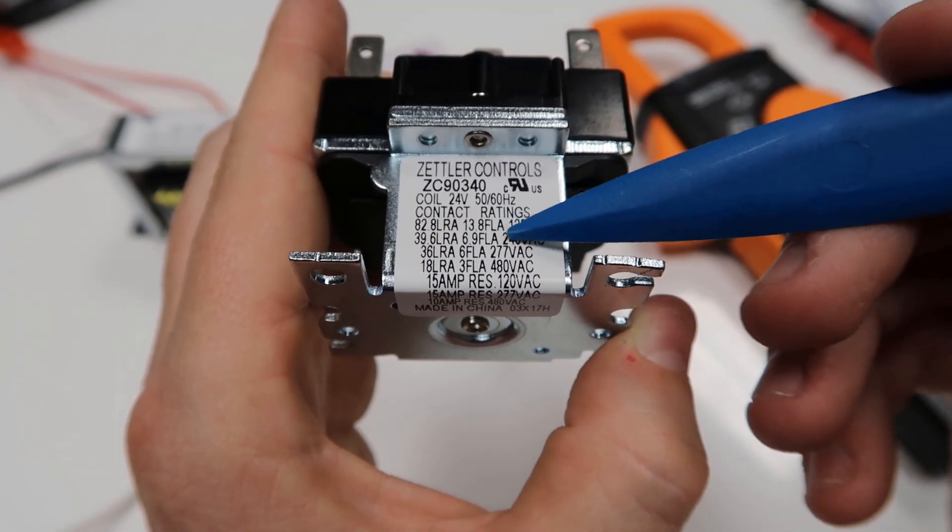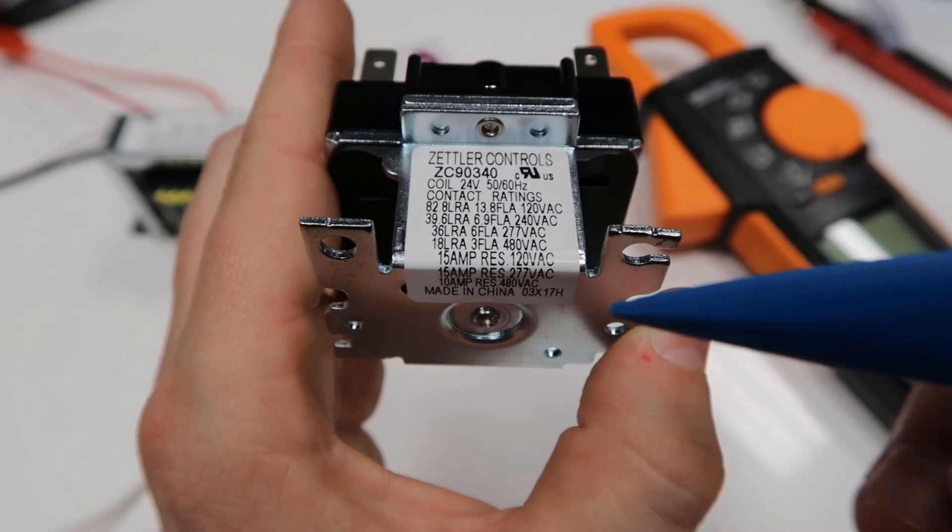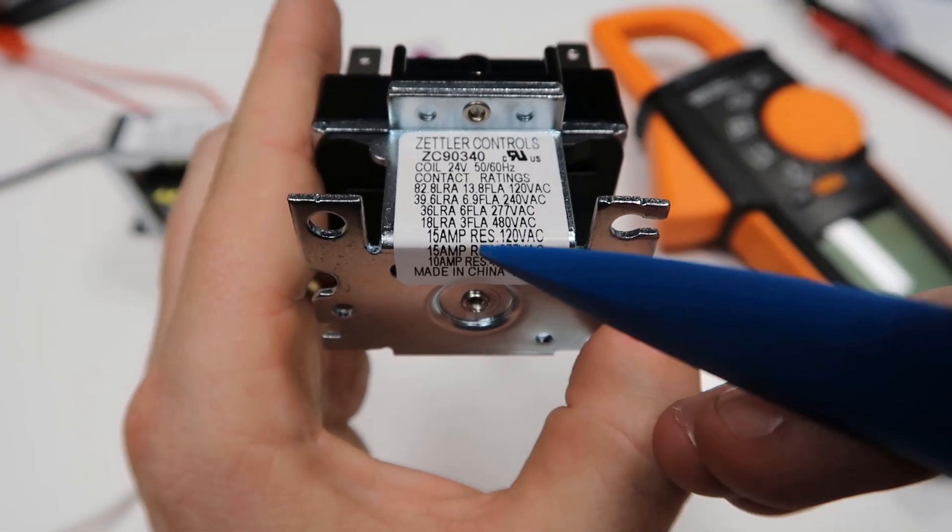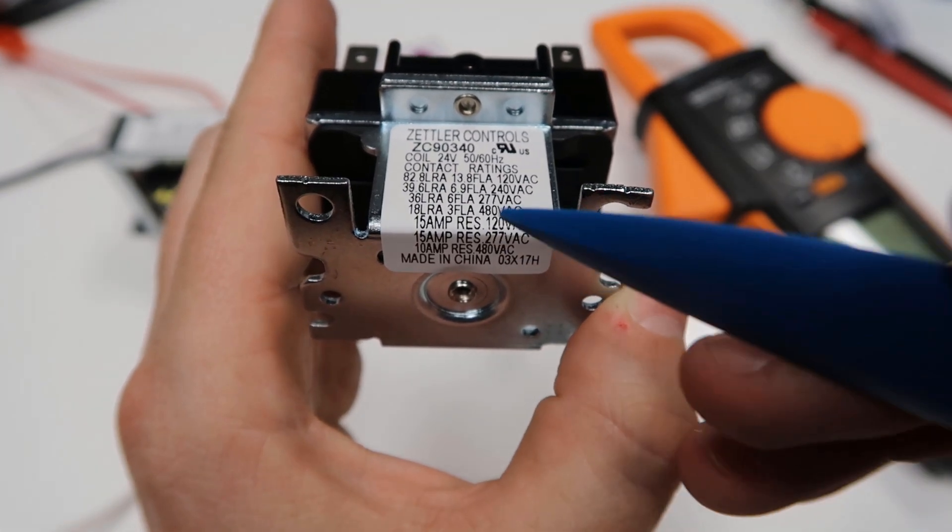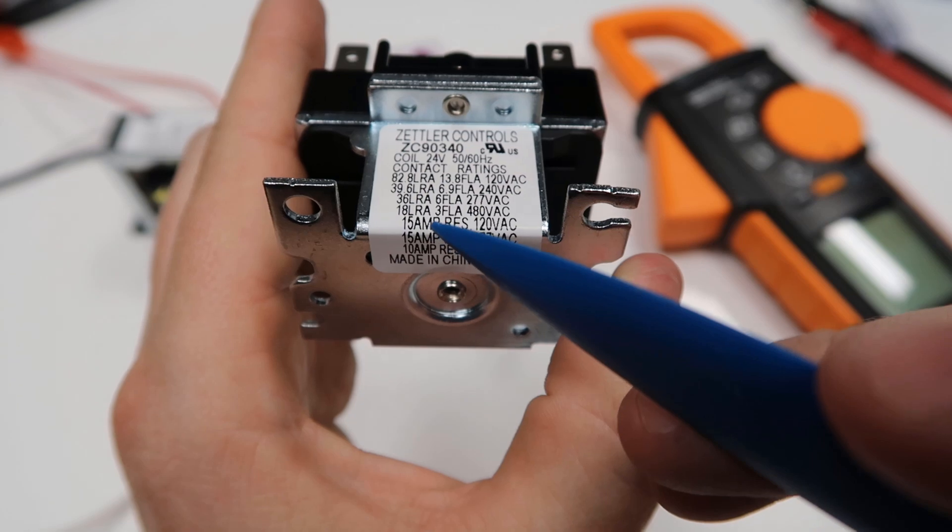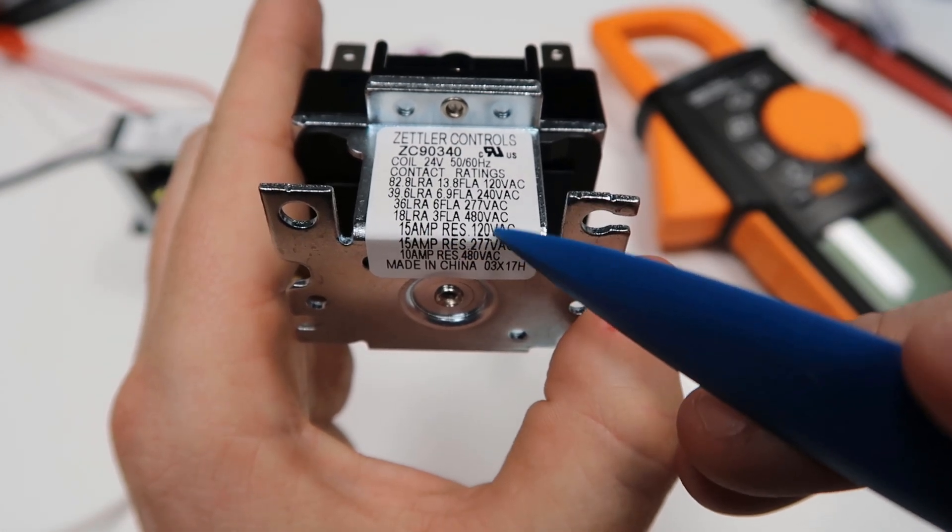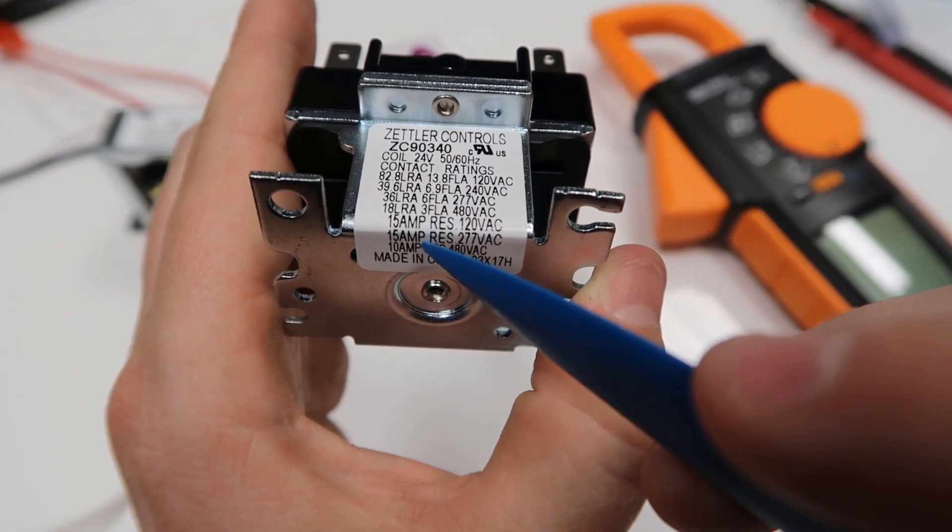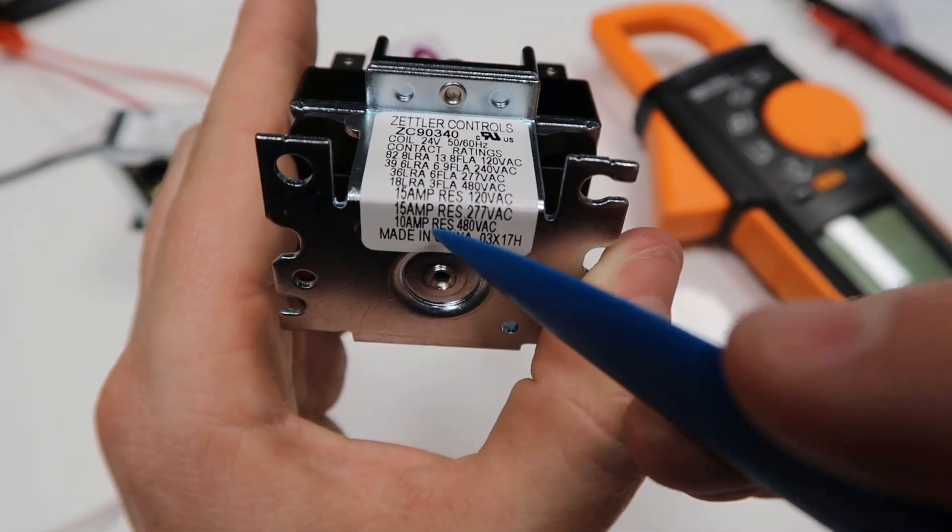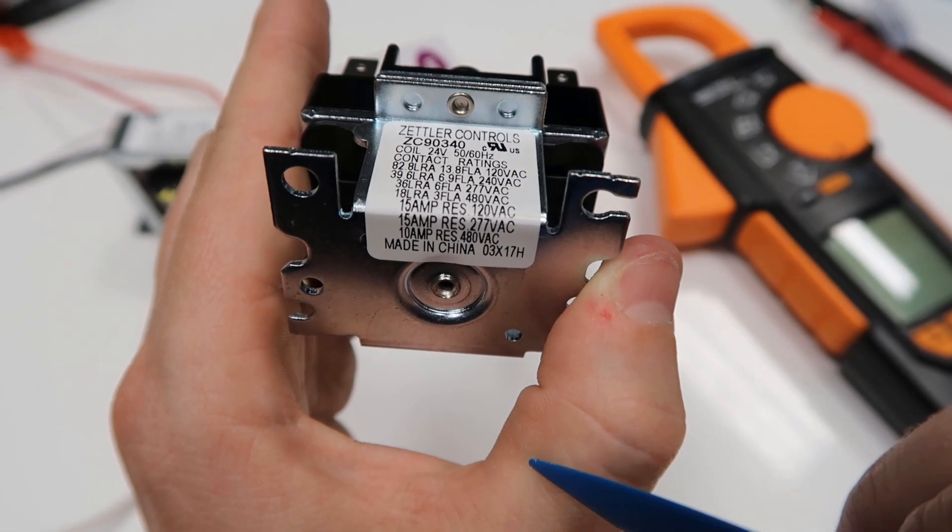If you're controlling a motor with it, you have to follow these rules based on the voltage. But if you're controlling a heater, that's a resistive load. That would be like a heat strip or an incandescent light bulb. You can see at 120 volts, it can control 15 amps. That's the amp capacity. 15 amps at 277 volts, and then it drops down to 10 amps if you go up to 480 volts.